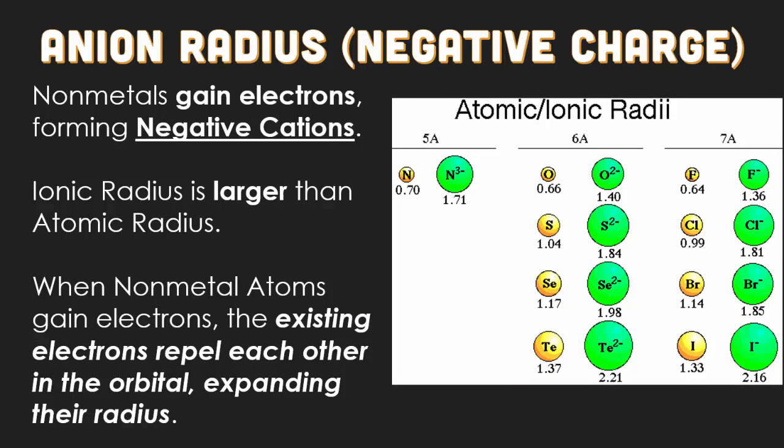Anion radius is all about the fact that nonmetals are going to be gaining electrons. As the nonmetals gain electrons, their ionic radius will be larger than their atomic radius. They're gaining. So when they do that, their existing electrons will be repelling each other, thus expanding their radius.